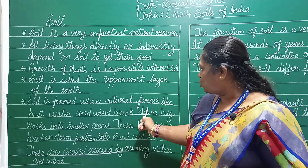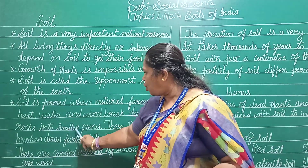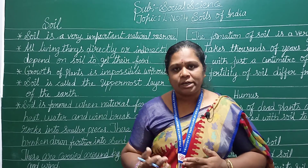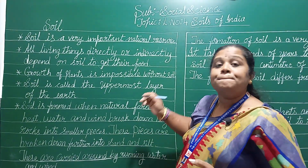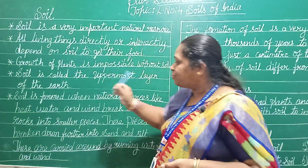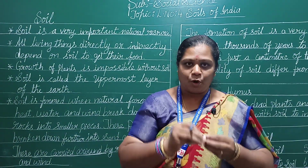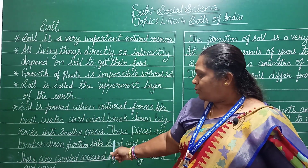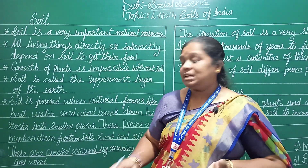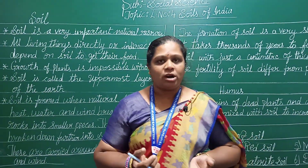Soil is formed when natural forces like heat, water, and wind break down big rocks into smaller pieces. These pieces are further broken down into sand and silt. Sand and silt are carried around by running water and wind.